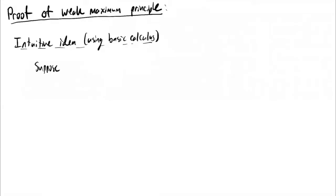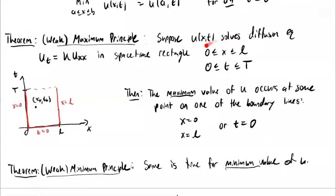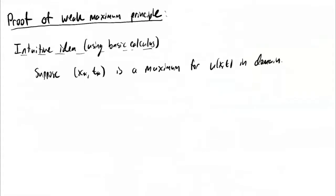Suppose x-star, t-star is a maximum for U in the domain. How do we know a maximum is attained somewhere? This is why we're looking at a finite domain — it's a closed rectangle, so because of the extreme value theorem, as long as U is continuous, there has to be a maximum attained somewhere. Of course we're assuming our solutions are continuous. By the extreme value theorem, there's some point where the maximum is obtained. Let's see what happens if it's in the interior.